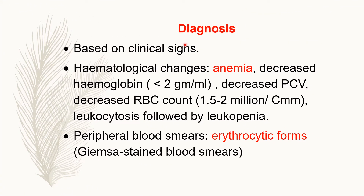First, we will see the diagnosis. For every diagnosis, we have one sentence based on clinical signs. Some of the clinical signs in Theileriosis are: fever, anemia — that is paleness of mucous membrane — enlargement of the peripheral lymph nodes, hemoglobinuria, red urine, and icterus or jaundice. These are the typical signs of Theileriosis.